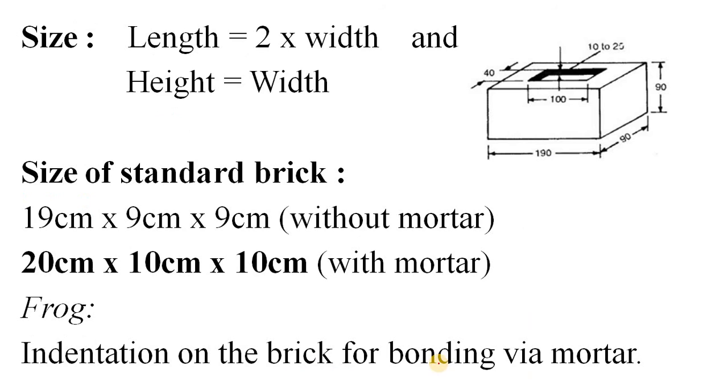What is the size of a brick? Normally, the length of a brick is twice its width, and its height and width are the same. For a standard brick, also known as a modular brick, the dimensions without mortar are 19 cm × 9 cm × 9 cm. When you add mortar, the dimensions become 20 cm × 10 cm × 10 cm. In this picture, the dimensions given without mortar are 190 mm length, 90 mm width, and 90 mm height.